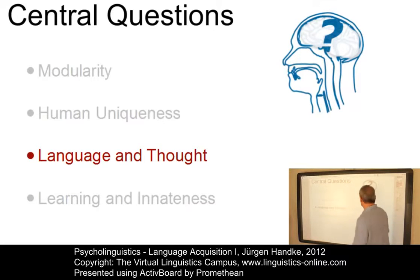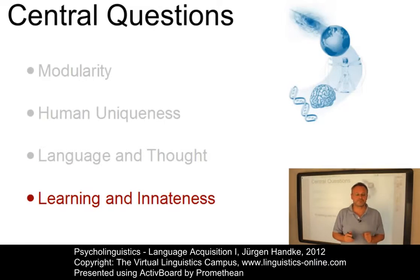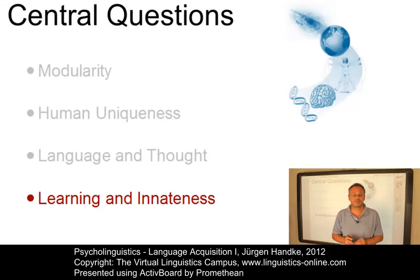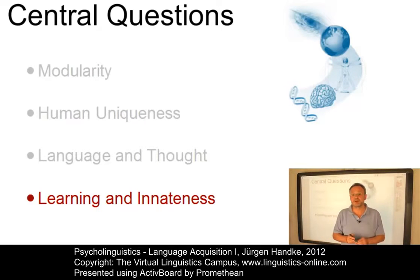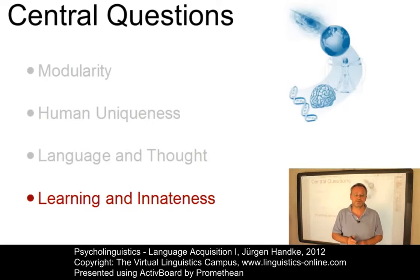And finally, the question concerning the relationship between learning and innateness. All children have some innate capacity for language, but it depends on where a child is brought up whether he or she will acquire English or Japanese, for example. So both heredity and environment play a role in language development. But how do the two interact? That's a very important research question in linguistics and psycholinguistics.